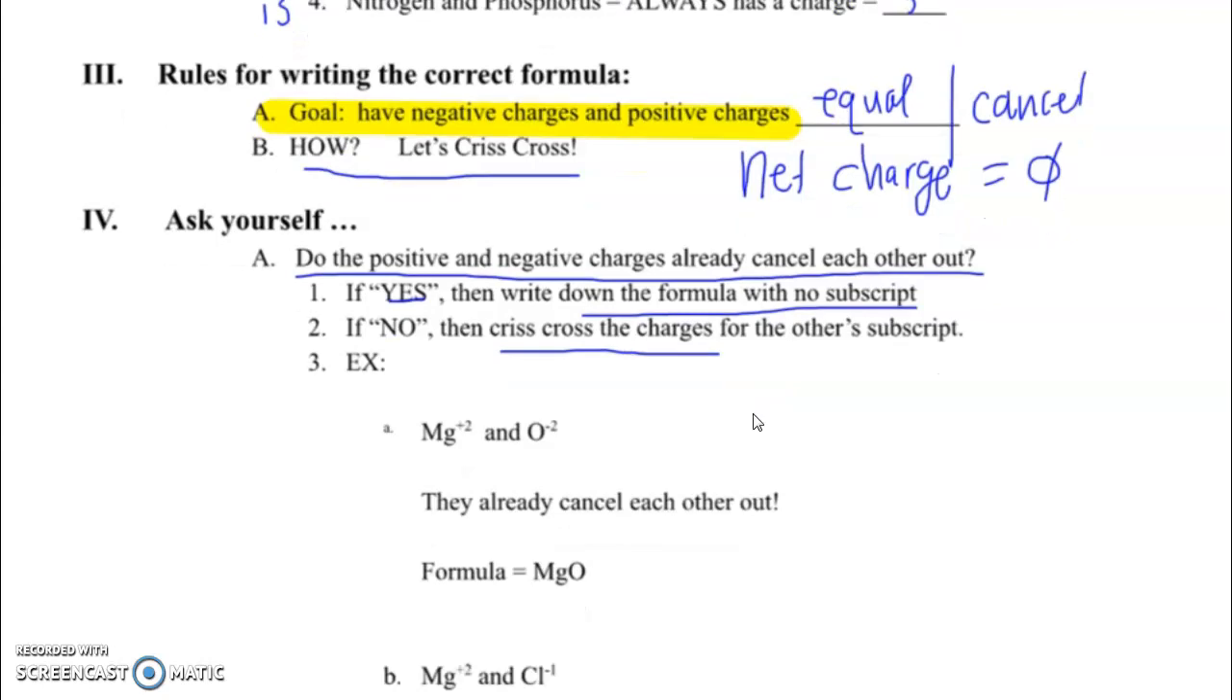So how can we do this? There's a couple ways. Let's try the crisscross method first. So the first question you ask yourself is, do the positive and negative charges already cancel each other out? If yes, you just write down the formula with no subscript. If no, then we'll crisscross the charges for the other subscript. So here's an example. If we took magnesium, which is a 2+, and oxygen, which is a 2-, they already cancel each other out. So if we have a positive 2 and we add a negative 2, it equals 0. That means we need just one magnesium for every one oxygen. The formula is just MgO. You can think about it's like Mg1, O1, but just like in math class, we don't need to write the 1. So in math class, you know that 1x is the same thing as x. The 1 is implied. So we don't write those 1s.